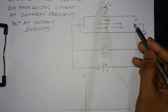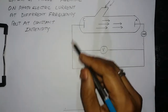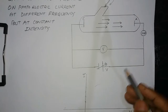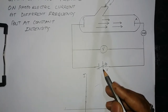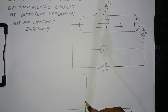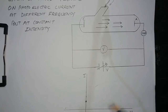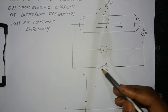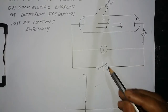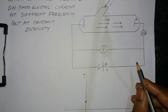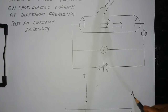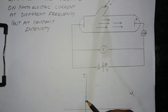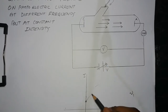In the circuit, anode A is connected with the positive terminal and cathode C is connected with the negative terminal. When V is zero we are getting some current, and when we start increasing V at frequency ν₁, the photoelectric current starts increasing.